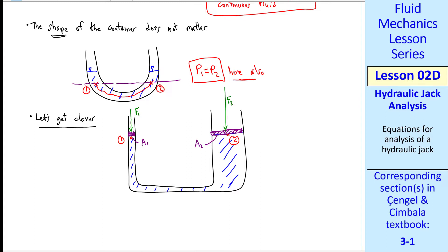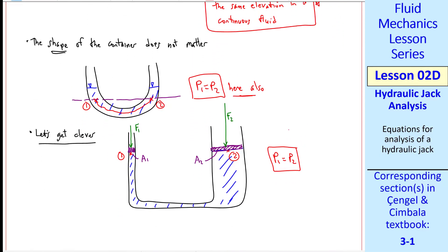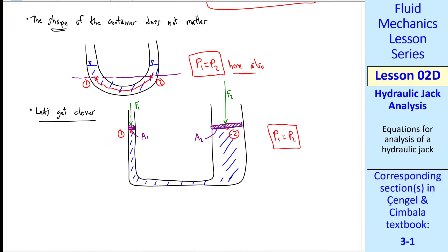Now we apply some force F1 on the left leg, and some other force F2 on the right leg. These two forces are not necessarily equal. In fact, they won't be equal, and that's the whole purpose of a hydraulic jack. Just as in the above two cases, P1 is equal to P2 at these two locations, since they're at the same elevation through a continuous fluid.